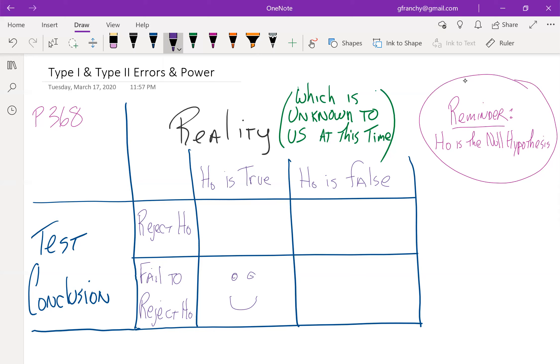And the same thing is if the null hypothesis is false and we end up rejecting it. Again, we're happy campers because it turns out that we made the right decision.